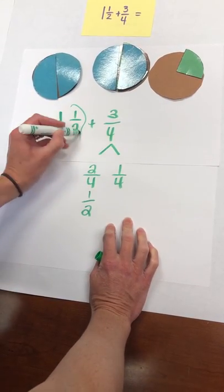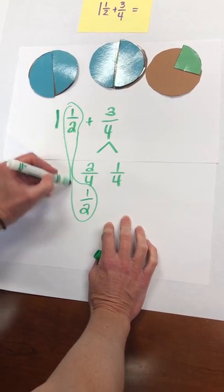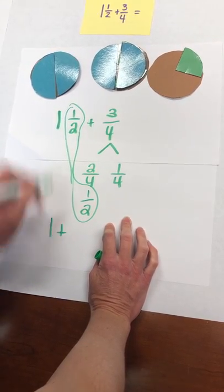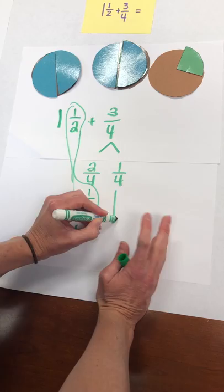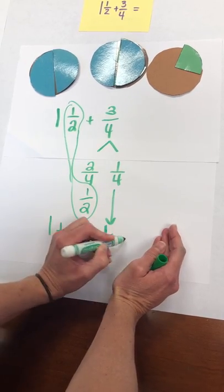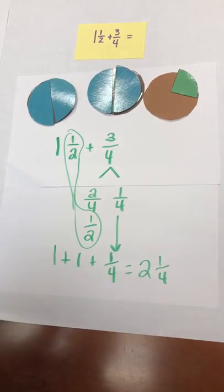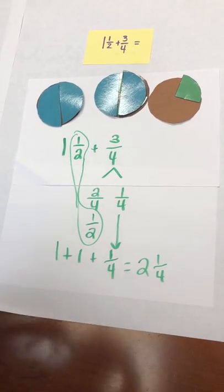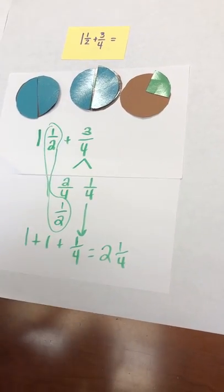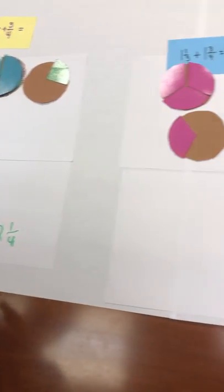I took my two-fourths from over here and I moved them into here which is equivalent to a half. This allows me to add the half plus a half to make the whole and then only have the one-fourth leftover. So my answer is two and one-fourth. It's a very quick way to reason through and there's not steps that they're having to follow. They're really making sense of what the problem is asking them.